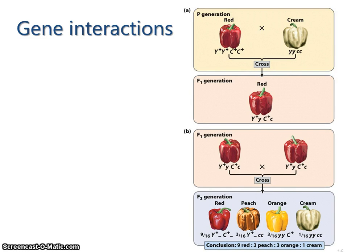Hey, this is Dr. M with another supplemental video for the Spring 2015 Genetics Lecture course, and this one's going to cover epistasis. I'm going to start out with gene interactions, and the thing about gene interactions is that a single trait — in this case color of bell peppers — is affected by two genes, not just one gene, but two genes, which means this is an example of a gene interaction, but this is not epistasis.